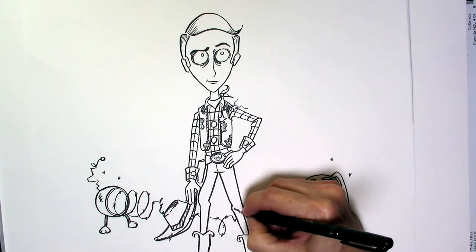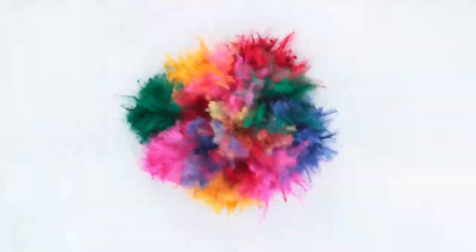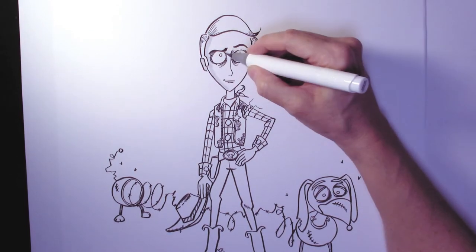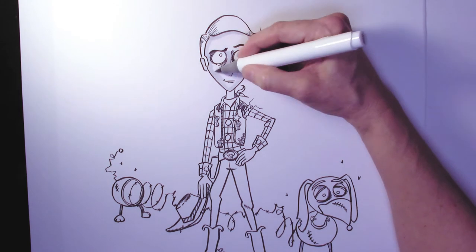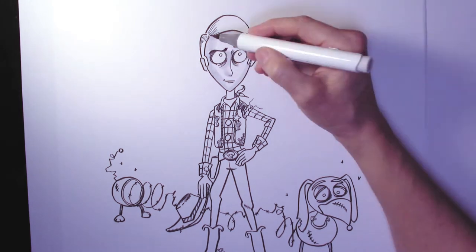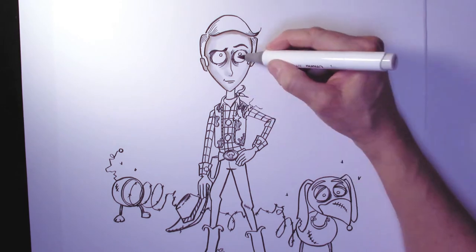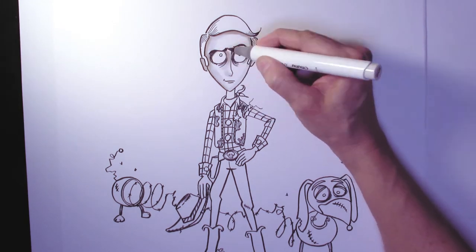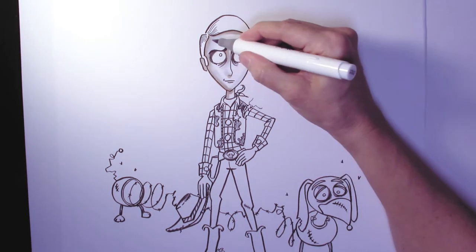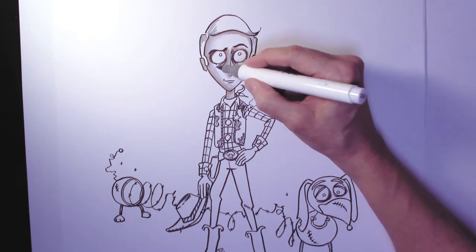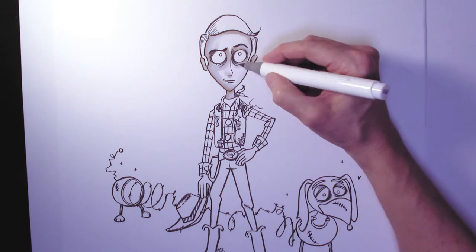After adding in a few more details, it's time for some color. Woody is colored with primary colors, but Tim Burton uses muted tones. So in order to achieve that, I start by putting in layers of warm gray, then I'll add in other colors and blend them in with the grays.